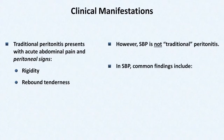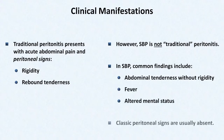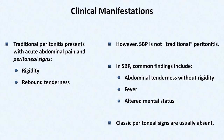In SBP, common findings include abdominal tenderness without rigidity, fever, and altered mental status. Those classic peritoneal signs of rigidity and rebound tenderness are usually absent. The typical patient diagnosed with SBP presents with diffuse, vague abdominal pain with only modest tenderness, and altered mental status is often as pronounced as the abdominal findings.